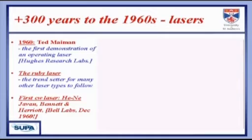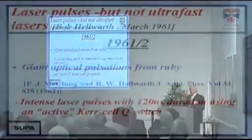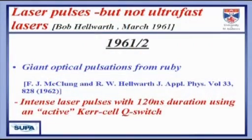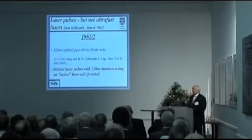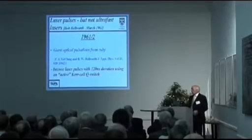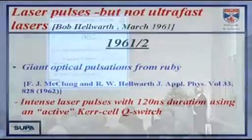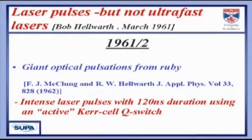Fast-forwarding 300 years to mid-1960: Ted Maiman, the first CW lasers, brought the laser era on board. It's quite interesting that given developments happening in 1960, as early as spring of 1961, Bob Hellworth introduced the idea that for a ruby laser with a long upper state lifetime, you could frustrate lasing and build up the population inversion to get shorter, more intense pulses — originally called giant optical pulsations, later termed Q-switching because you were changing the quality of the cavity.